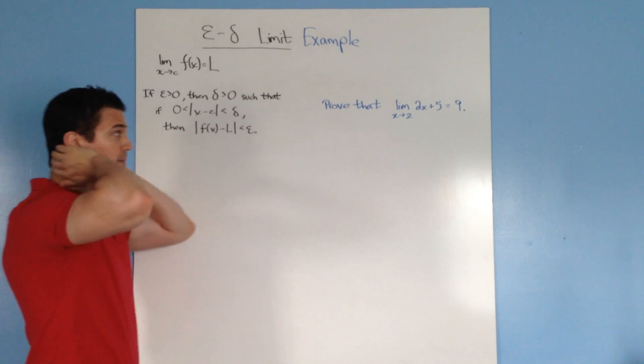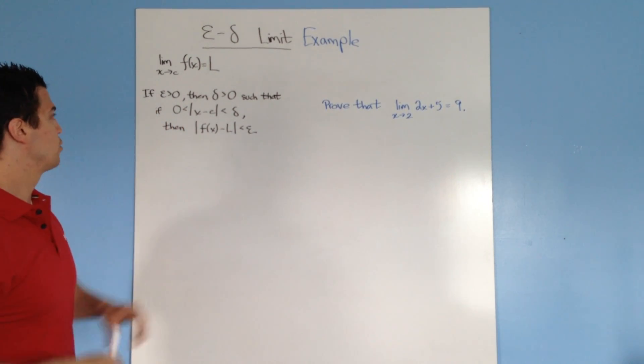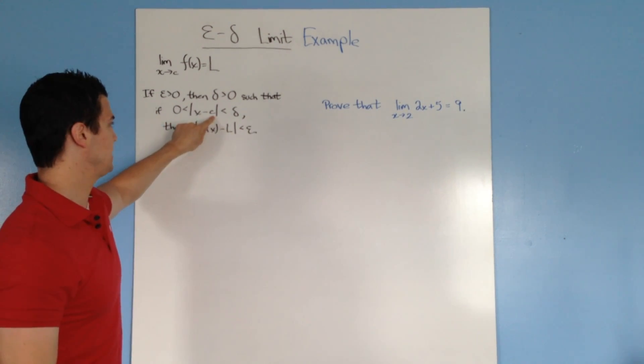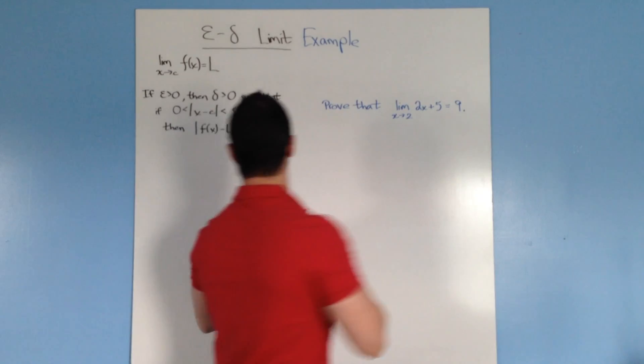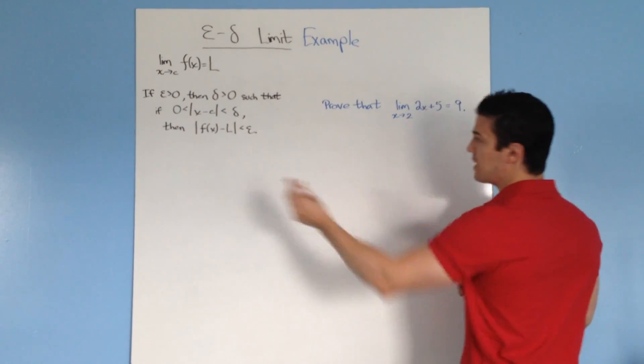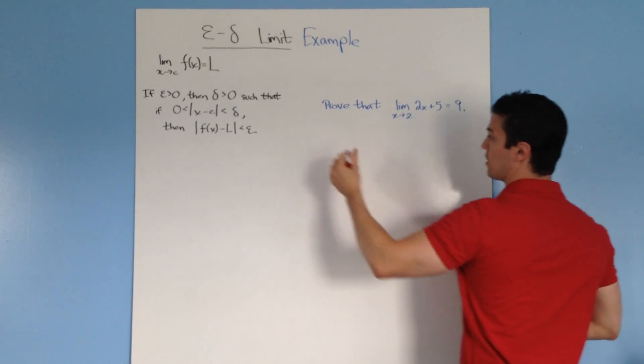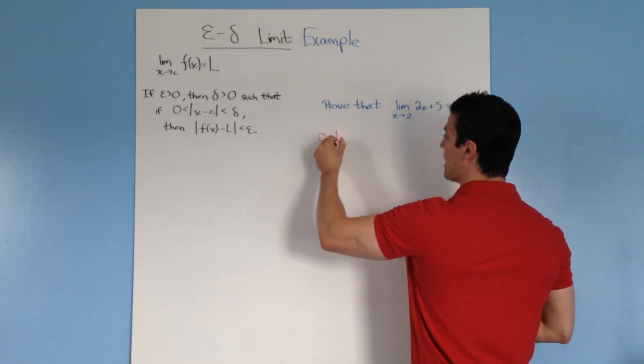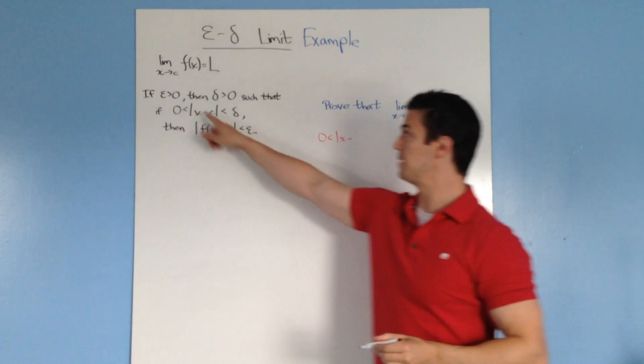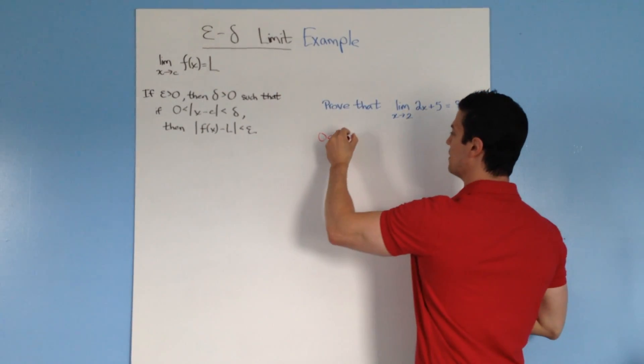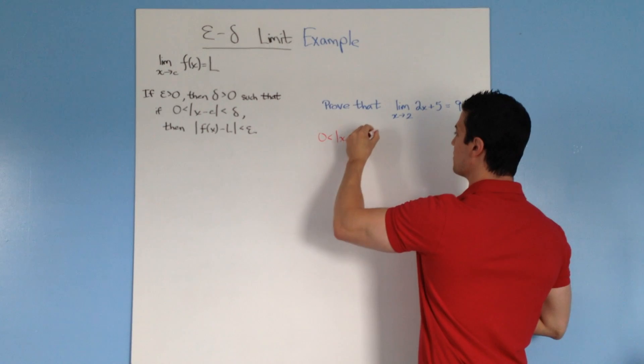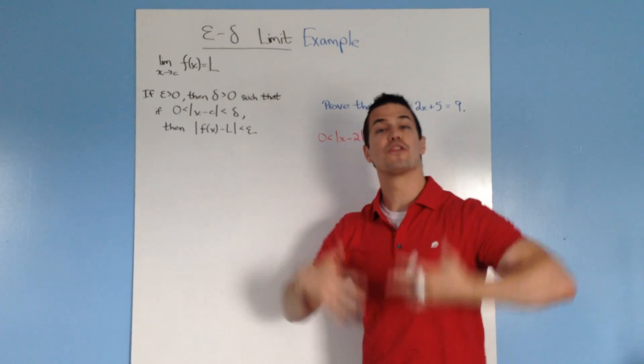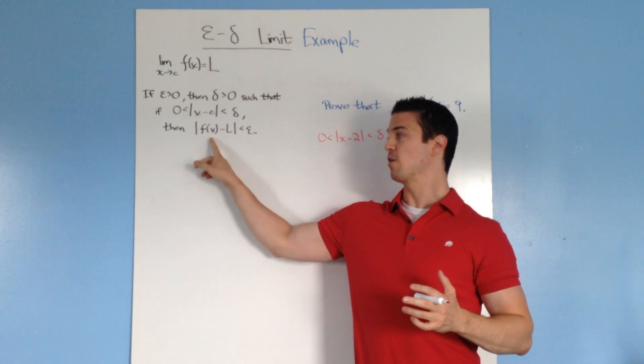So the first step is to write it down in terms of our definition. We have the absolute value of x minus c, this inequality here. I'm going to write that down according to our example. So 0 is less than the absolute value of x minus c... well, we don't just have c anymore, we have 2. So I'm going to put 2 in there: the absolute value of x minus 2 is less than delta.